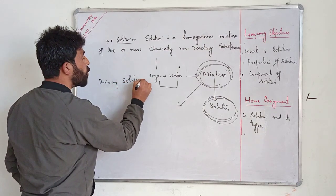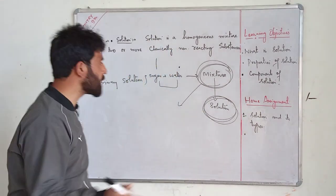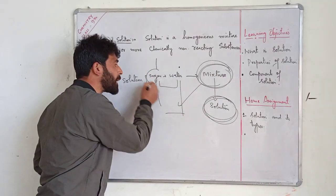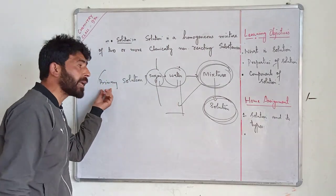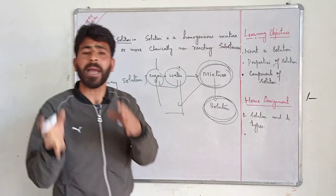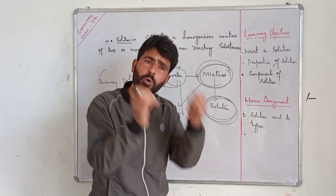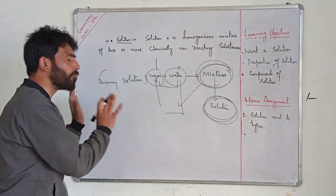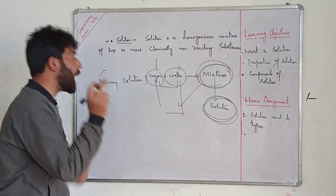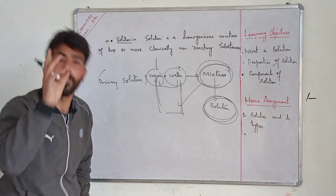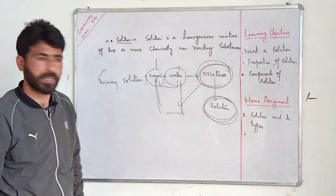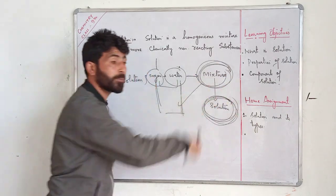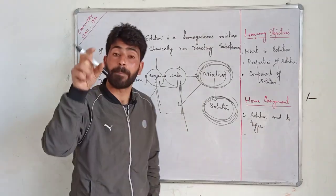Binary solutions are those solutions which use only two components. For example, we put sugar into water and we have a solution. This simple two-component mixture is what we call a binary solution.